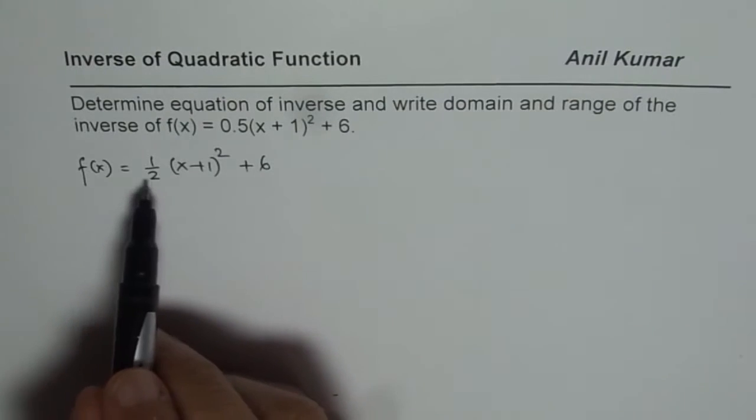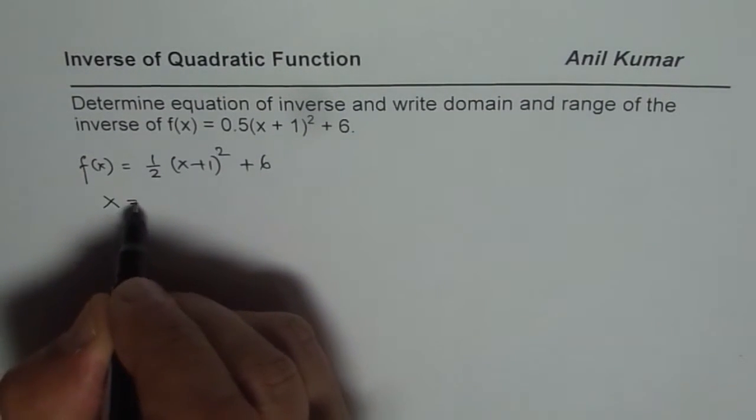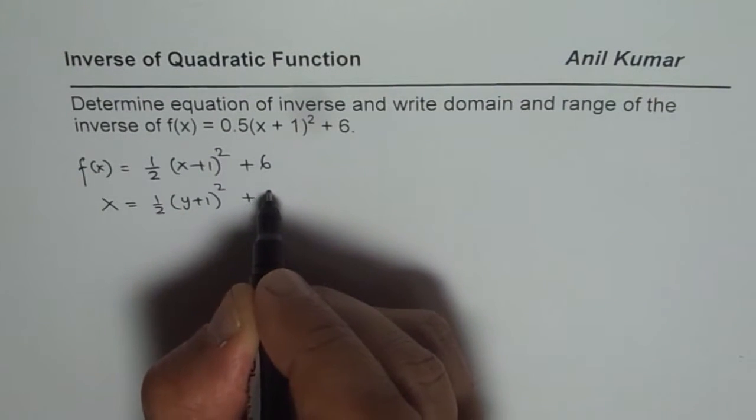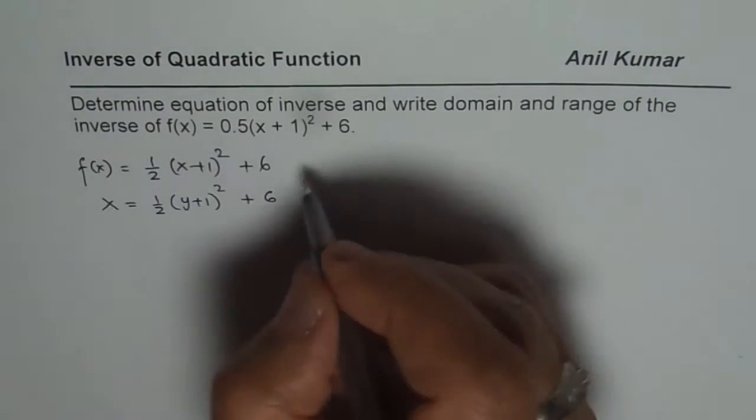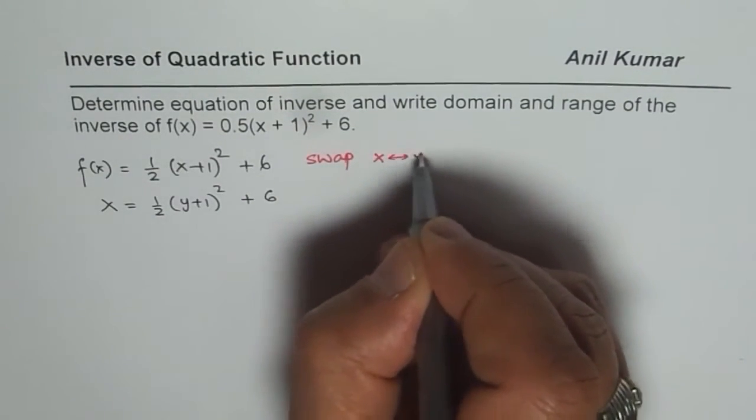Now to find inverse we actually swap x and y. So that is the first step. So I will write x equals to 1/2(y + 1)² + 6. So first step is swap x and y.